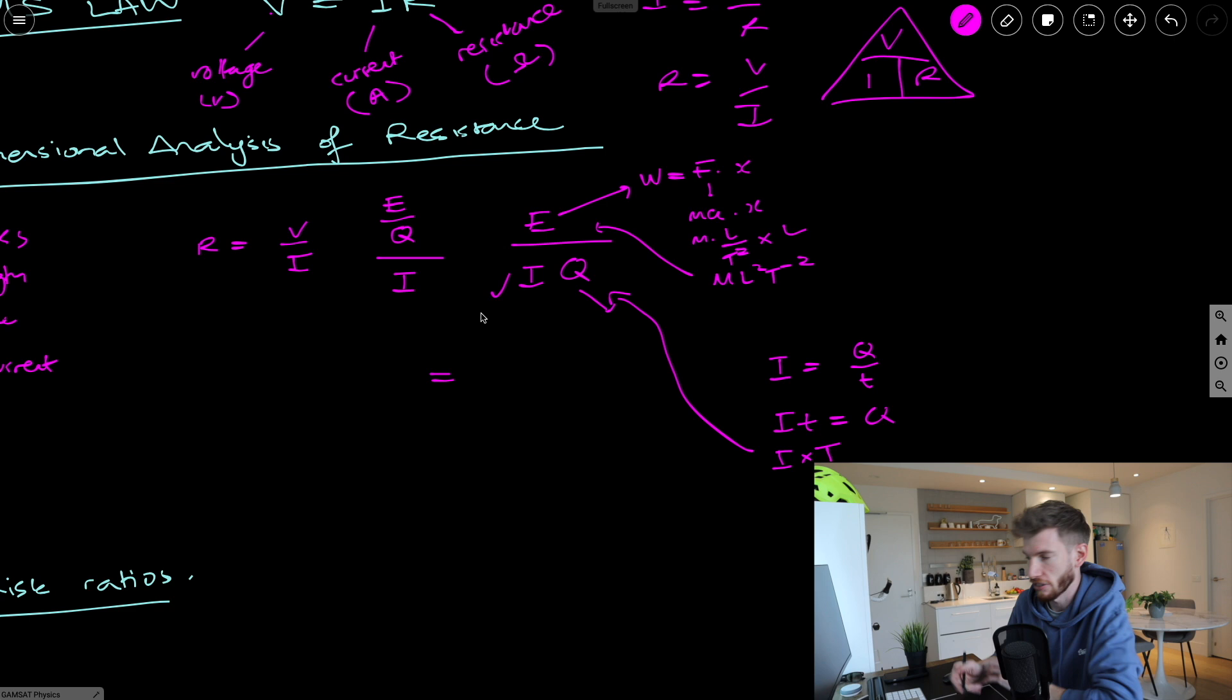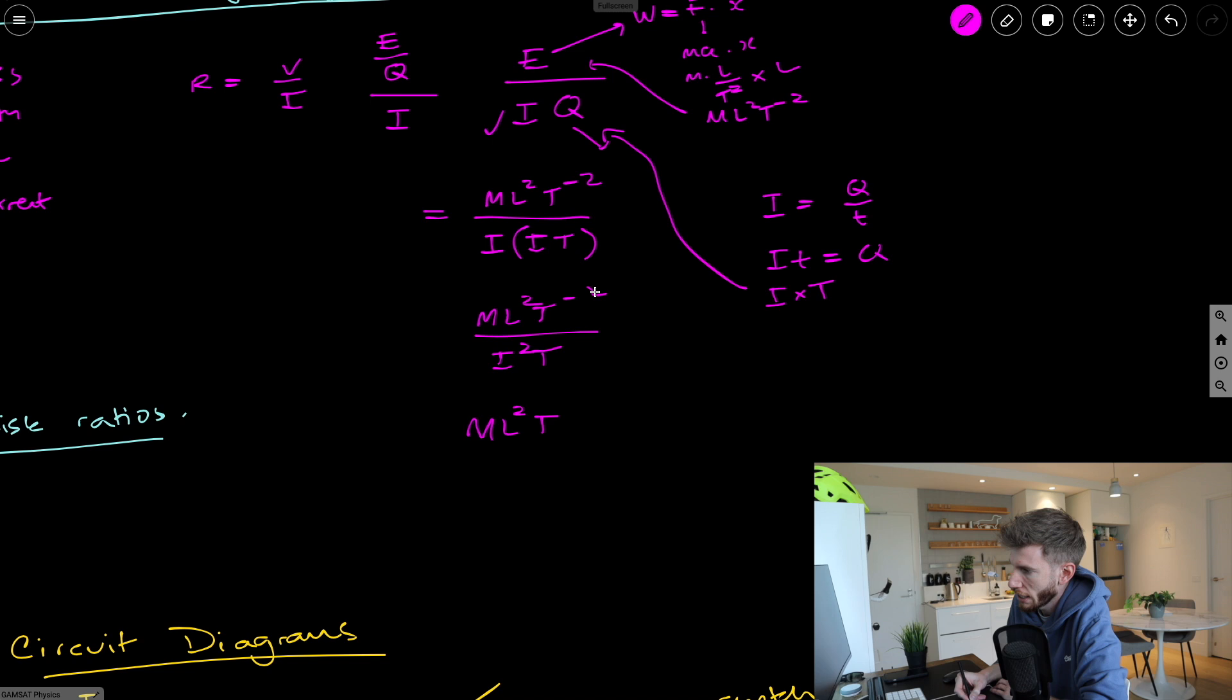So putting all that together, we're now just going to calculate the dimensions of resistance. So the energy was mass per length squared, or mass length squared, per time squared, divided by current, multiplied by, and then Q is I times T. Like that. And so now we can see ML squared T negative two over, we can expand this out and we can get I squared T. And then we can apply our index laws like this. I might just move this up a little bit. And so now we're just going to do the second index law where we subtract powers when we divide. So ML squared, there's no pairs, T, we've got negative two, take away a one from the bottom, so that'll be negative three. And then we have I to the negative two, because that's also from the bottom. So we have mass length squared per time cubed, and then per current squared, like that. And that would be the dimensions of resistance, just like that.